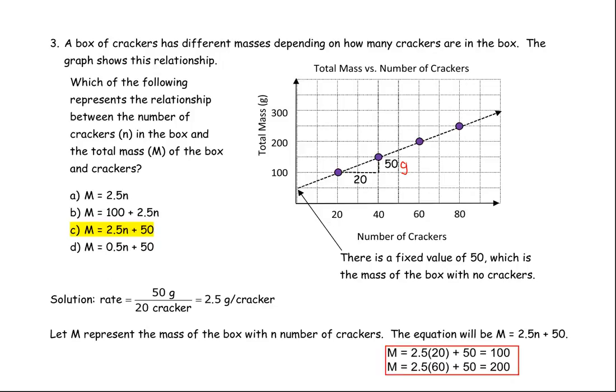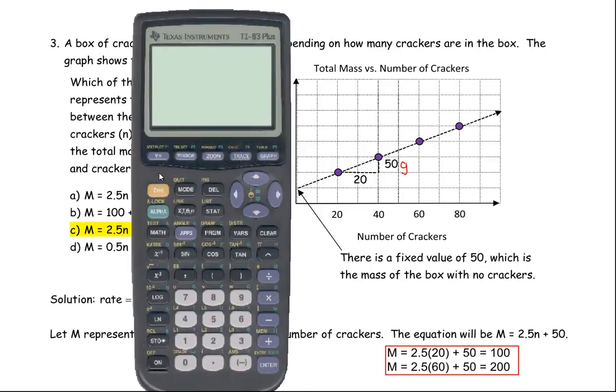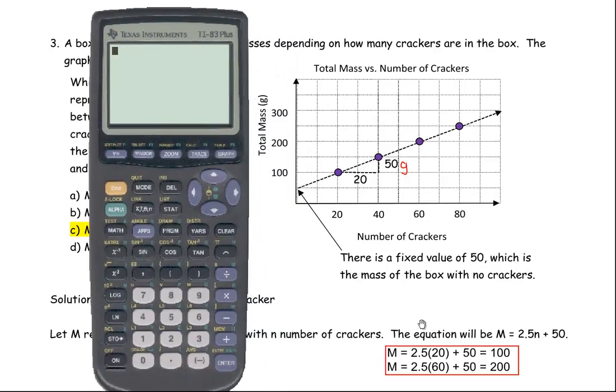So I've placed a couple calculations on the page here. For example, since every cracker weighs 2.5 grams, if I wanted to verify that point here, if I put 20 in the formula, 2.5 times 20 plus the 50 on the end, see 2.5 times 20, because there's 20 crackers in my example here, plus the 50 on the end, that gives me 100. So notice that 20 crackers, the whole box with the crackers in is 100.